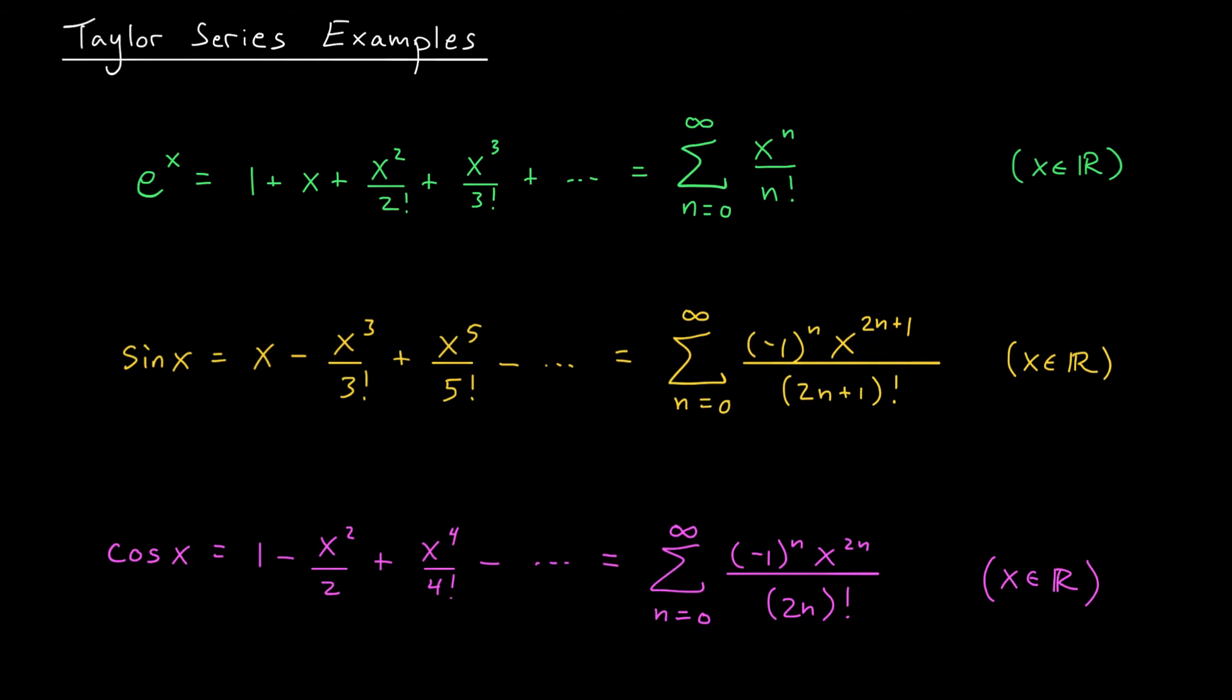Take for example the function e^x. The terms in its Maclaurin polynomials are of the form x^k divided by k!. As a little challenge, try to show that for any value of x, the error in our approximation tends to 0 as n, the number of terms we use, tends to infinity. With this in mind, the Taylor series for e^x is given by this infinite sum of x^n over n!. The value of this sum matches the value of our function for all x in R.